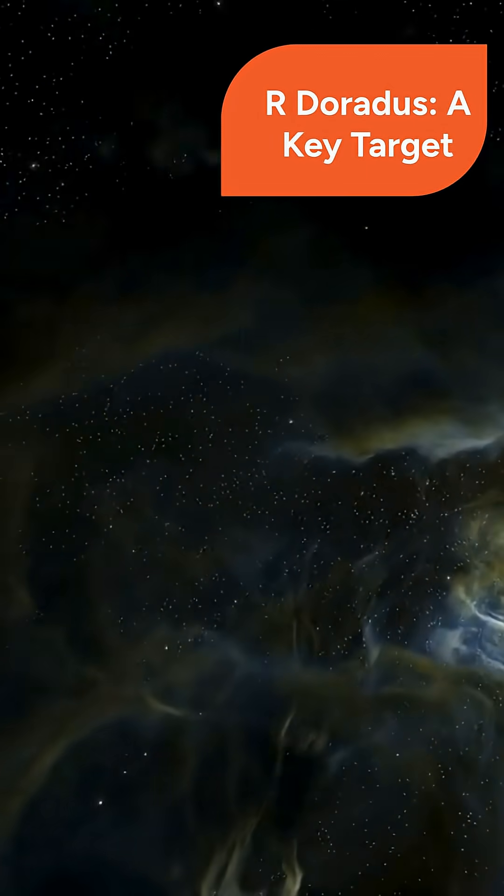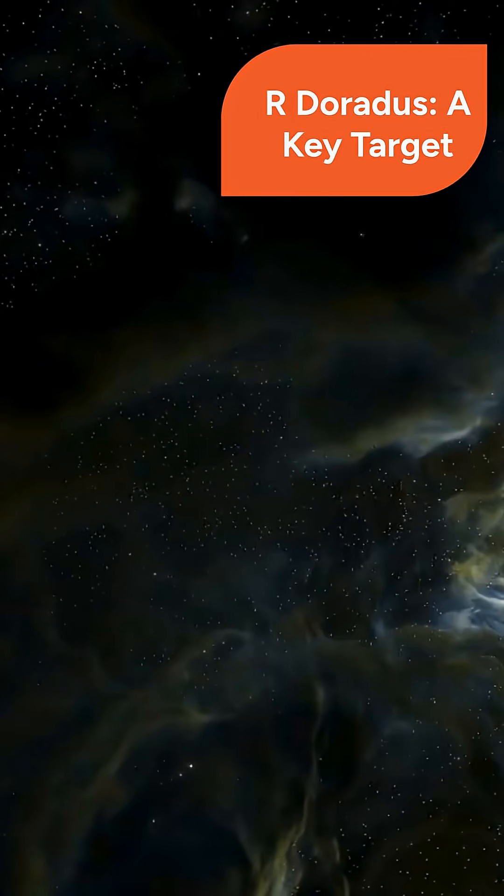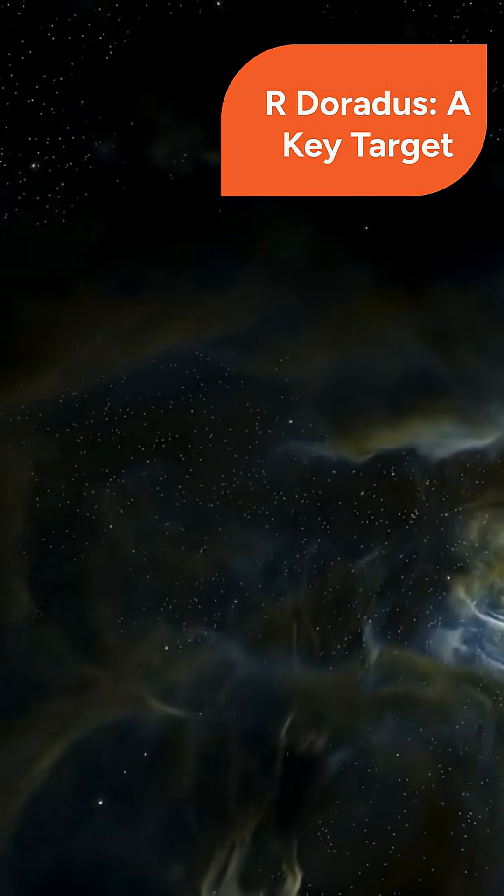R. Doradus is bright, nearby, and a typical example of the most common type of red giant, making it ideal for detailed observation.